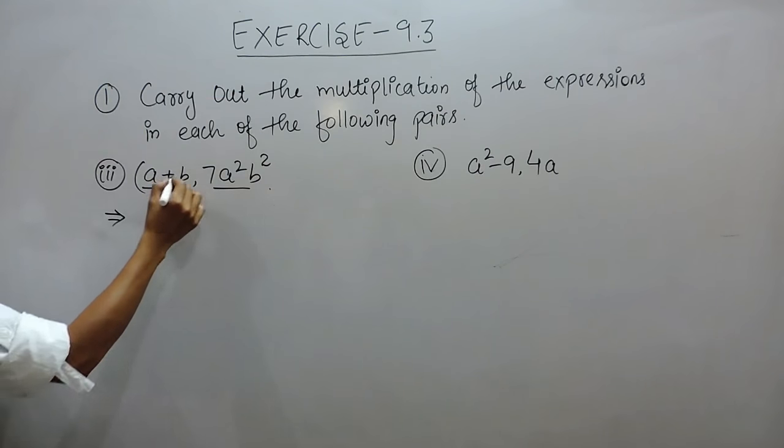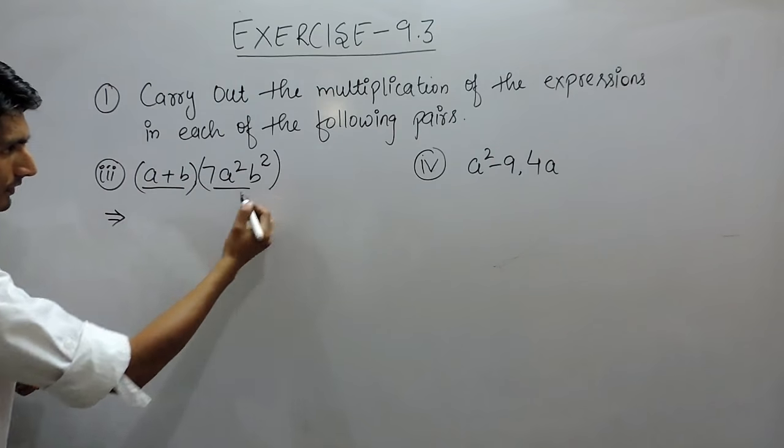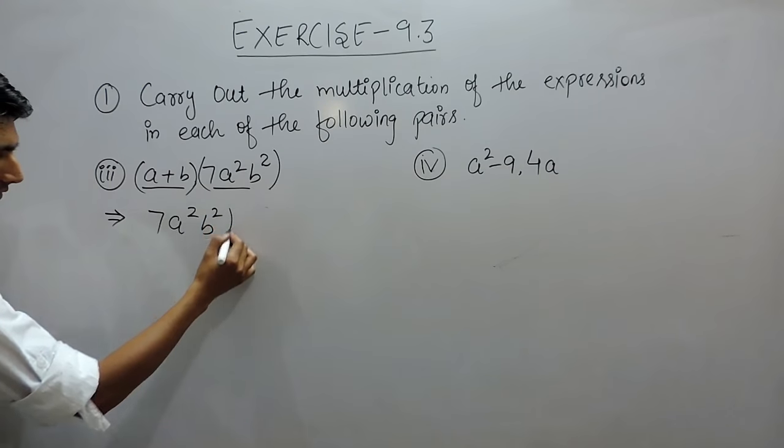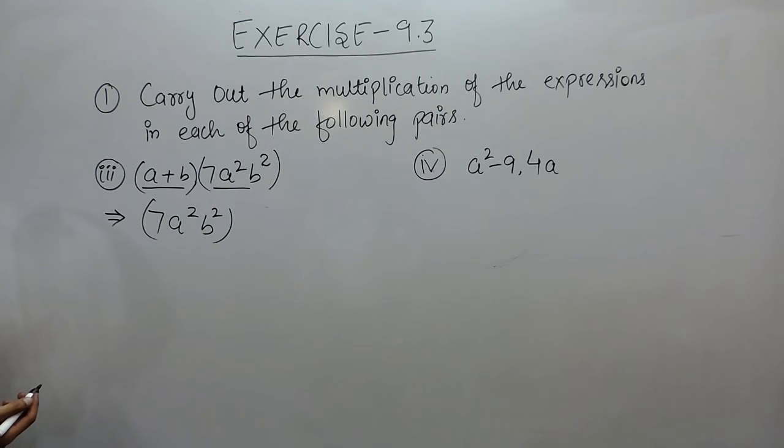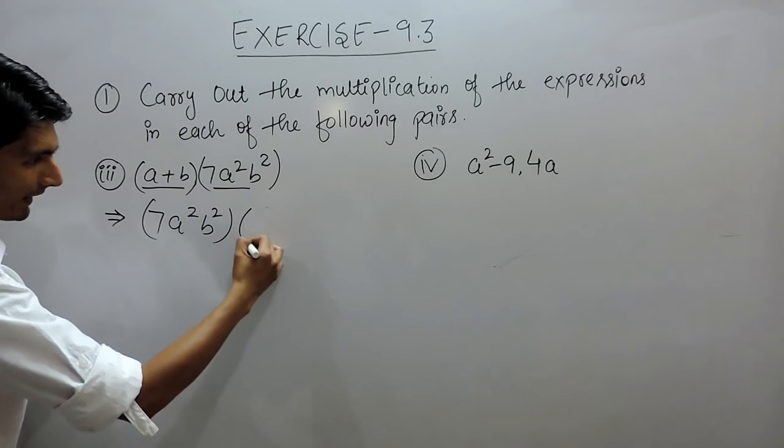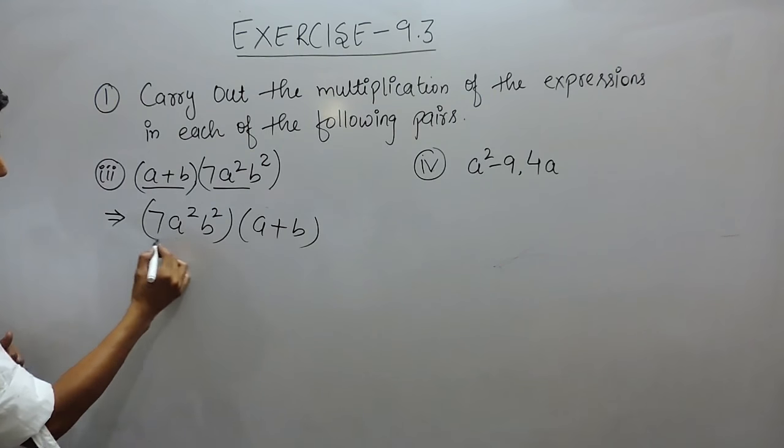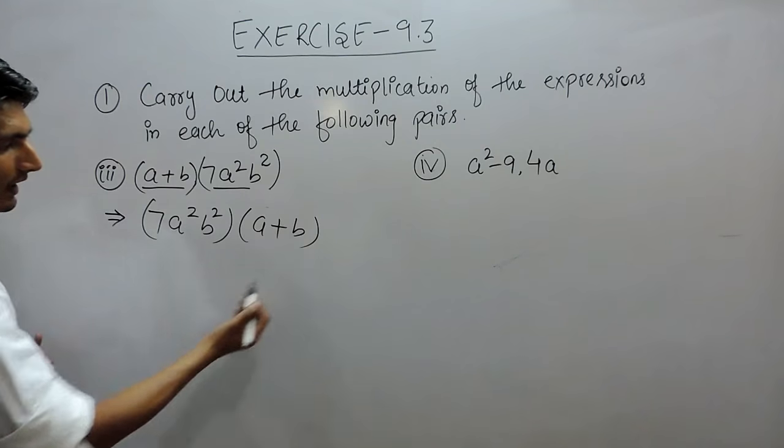So when this is multiplied by this, it is better to write the single term first, or you can say the monomial first and the binomial after that.